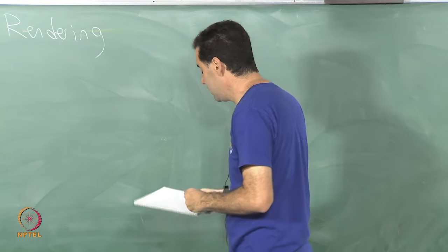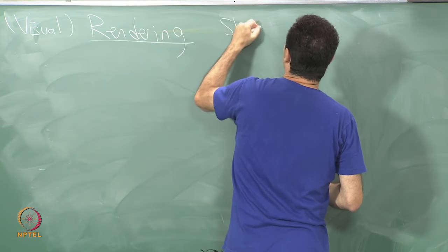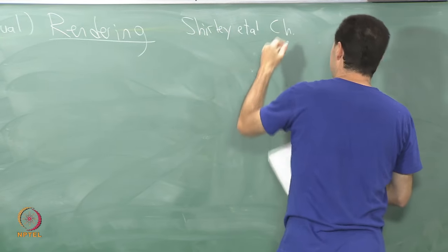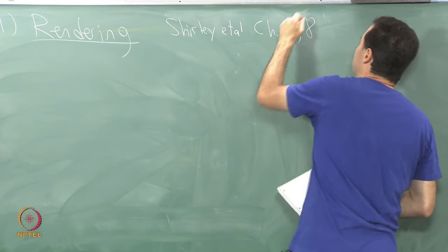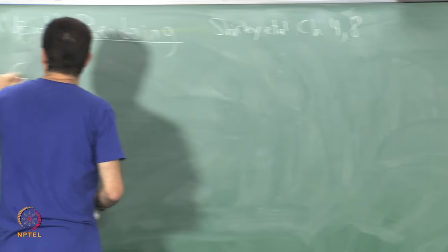If you are following along in the textbook, I suggest looking at Shirley et al. chapters four and eight before the next lecture. So you might recall we did this thing called the chain of transformations.